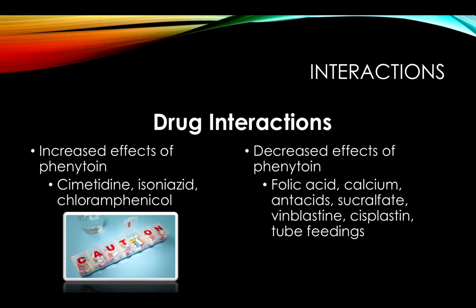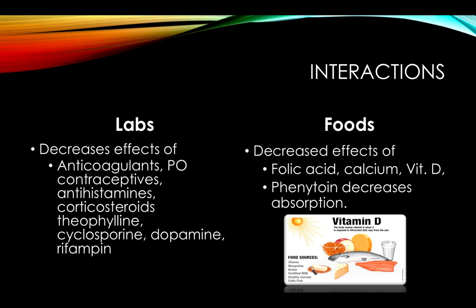There are many drug interactions because Dilantin is highly protein bound and competes with other drugs for plasma protein binding sites. For example, Dilantin displaces anticoagulants and aspirin, causing more free drug availability and increasing their activity. Certain antipsychotics and herbs can lower the seizure threshold and increase seizure activity. Dilantin has increased effects when given with cimetidine or isoniazid, and decreased effects when given with folic acid, calcium, sucralfate, or tube feedings. Dilantin decreases the effect of anticoagulants, oral contraceptives, and antihistamines, and increases absorption of folic acid, calcium, and vitamin D.